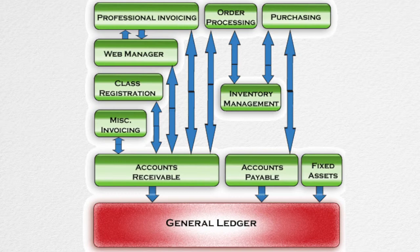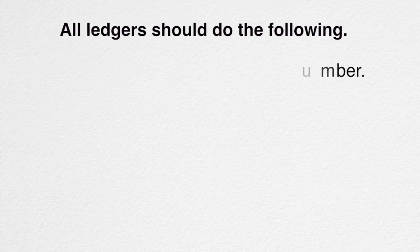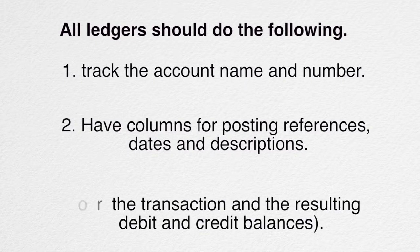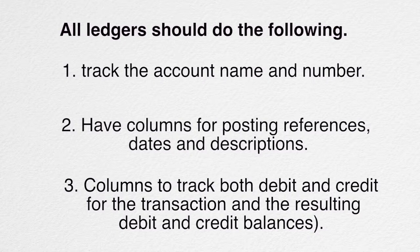The general ledger itself is not a single file; rather it's a conglomeration of all the sub-accounts, such as equipment, cash, payroll, etc. When reviewing the general ledger, you're reviewing the entire data stream of all accounts the business keeps. There are many types of general ledger account forms. Jello's second-in-charge Sean has decided to use a balanced ledger form, which shows the balance of the account after every entry and keeps a running tally of the debits and credits. All ledgers should track the account name and number, have columns for posting references, dates, and descriptions, and columns to track both the debit and credit for the transactions and the resulting debit and credit balances — and it should be for every transaction.